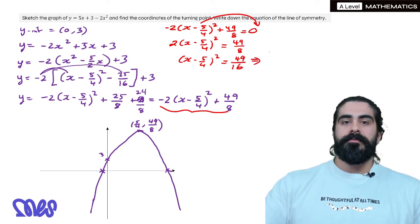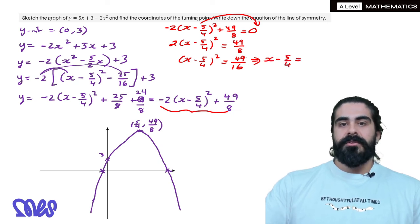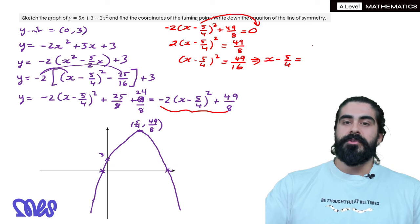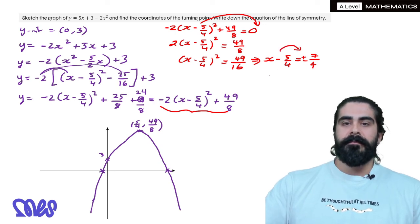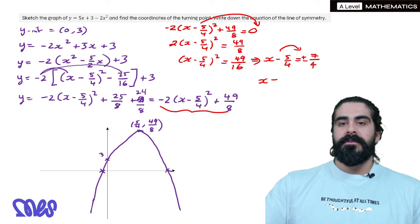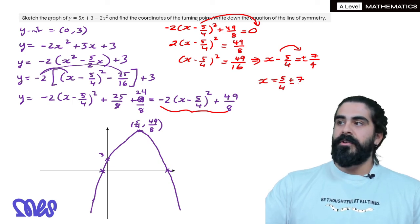Then we square root both sides and we get x minus 5 over 4 equals, when you square root this number, you square root the 49, which is 7. You square root 16, which is 4. Don't forget plus or minus. Then we move the minus 5 over 4 to the other side. We get x is 5 over 4 plus or minus 7 over 4.